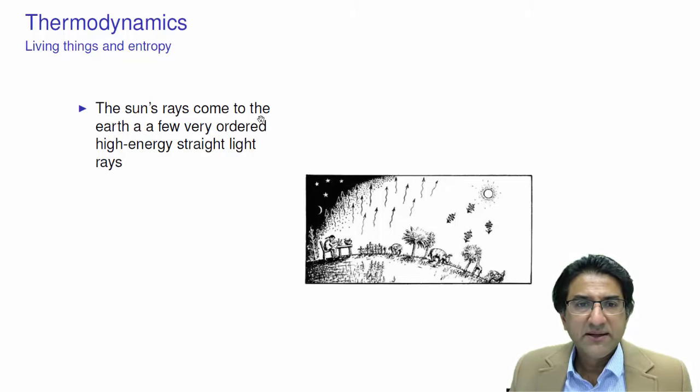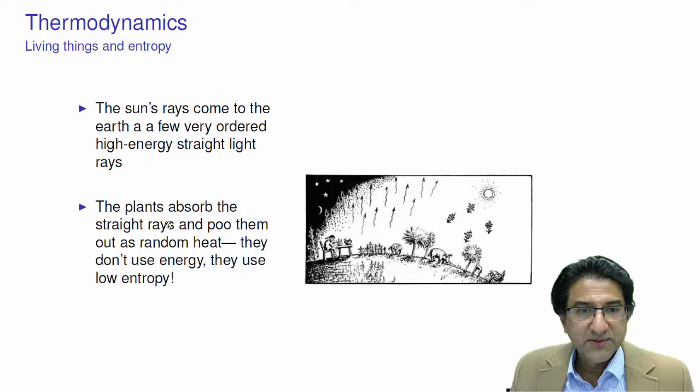Now, how is that possible? The sun's rays come to the earth in a very ordered way. They come straight from the sun in very straight lines. They hit the earth, and these straight lines of high energy light are converted to low energy heat in the form of infrared radiation. Here we have a picture of the sun, its rays coming straight down to the plants, and the plants absorb these red and blue type light frequencies, and they emit heat in all sorts of directions. Now, there's really a lot of light coming onto the earth, and the plants convert it into randomly directed heat. So plants absorb straight rays and poo them out as random heat. They don't use the energy.